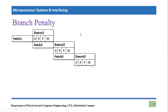In the last lecture we learned about a very important concept of pipelining. This is the same diagram that we have seen in the last lecture. Let's consider a program which consists of multiple lines: instruction one, instruction two, instruction three, four, five, and six.